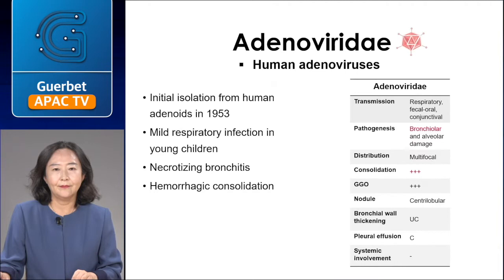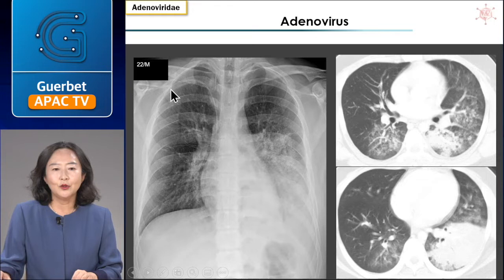Adenoviridae: bronchiolar and alveolar damage results from necrotizing bronchitis and hemorrhagic consolidation. Typical imaging findings include consolidation and ground-glass opacity. This is a case of adenovirus pneumonia in a 22-year-old immunocompetent man. Multifocal consolidations and ground-glass opacity along the bronchovascular bundle are noted.